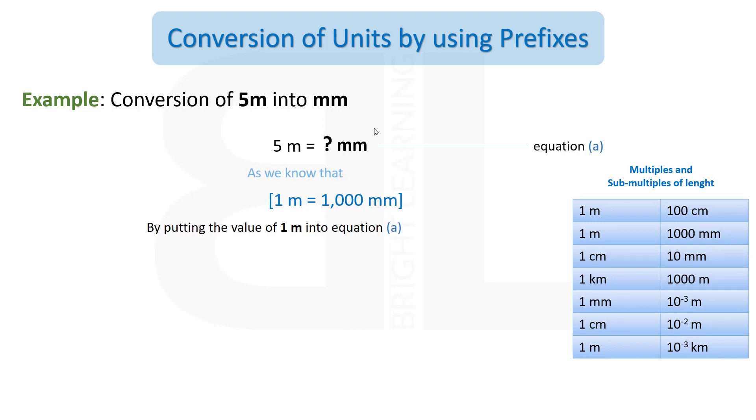As we know that 1 m = 1000 mm, by putting the value of 1 m into equation A, we get the expression 5 m = 5 × 1000 mm. Instead of meter, we have put the value of meter.